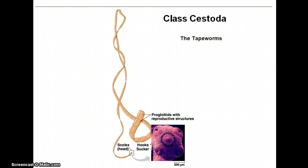They also exhibit simplification of digestive structure, and in fact the complete loss of digestive tract. Unlike the trematodes that still have a little bit, these guys have absolutely no mouth or digestive tract at all. And so they have to have lots of surface area for food or digested food materials that they're living in to be transported across their body surface.